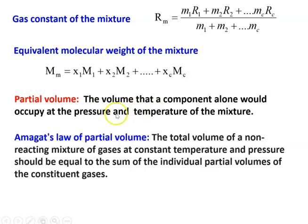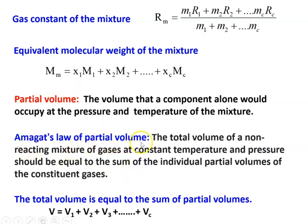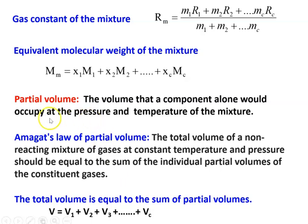We define partial volume as the volume that a component alone would occupy at the given pressure and temperature of the mixture. Amagat's law of partial volume states that the total volume of a non-reacting gas mixture at constant pressure and temperature is equal to the sum of the individual partial volumes of the constituent gases: V = V1 + V2 + V3 + ... + Vc. Dalton's law gives total pressure P = P1 + P2 + P3.